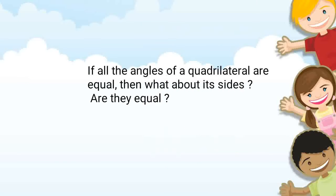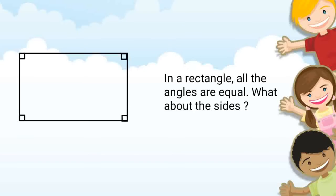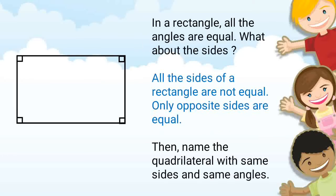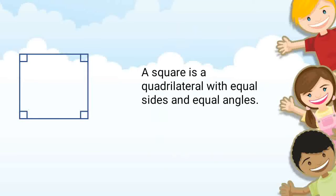If all the angles of a quadrilateral are equal, then are its sides also equal? In a rectangle, all the angles are equal, but all sides of a rectangle are not equal — only opposite sides are equal. The quadrilateral with both equal sides and equal angles is a square. A square is the quadrilateral with equal sides and equal angles.